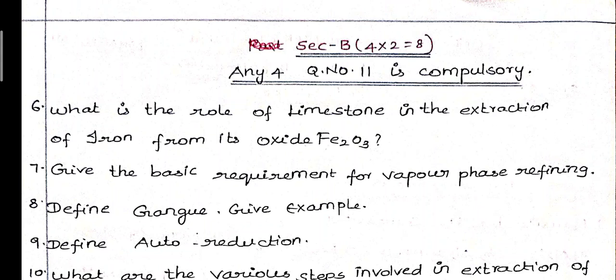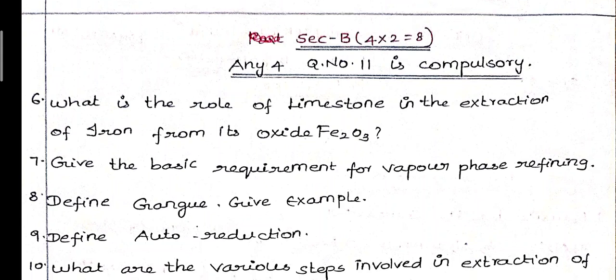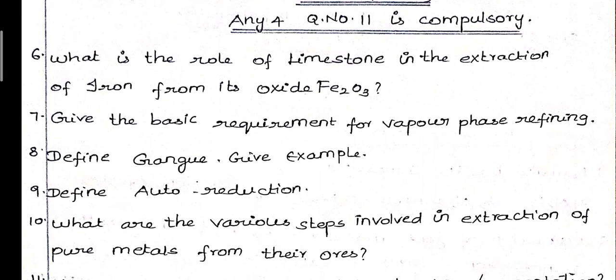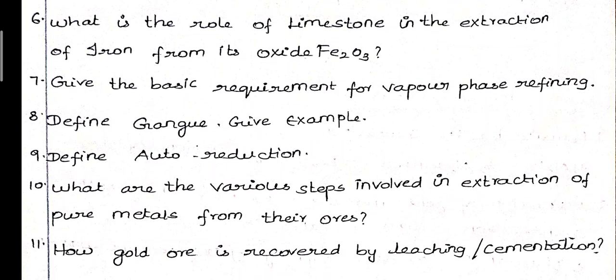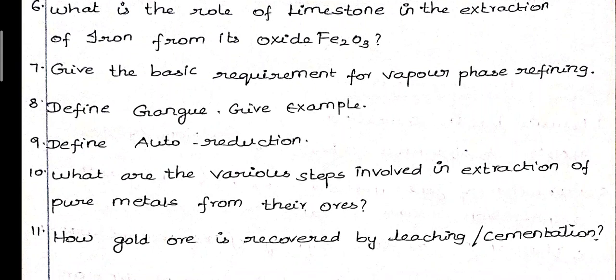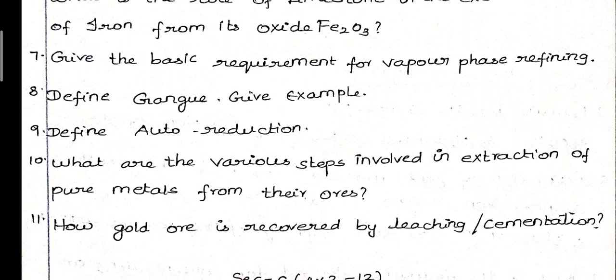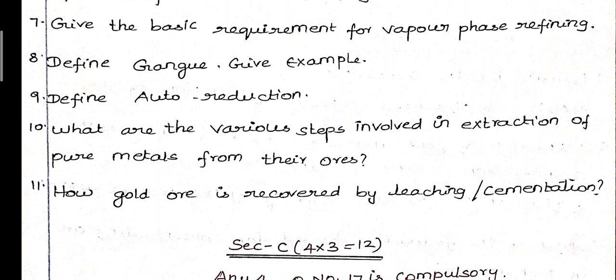6th question: What is the role of limestone in the extraction of iron from its oxide Fe2O3? 7th question: Give the basic requirements for vapor phase refining. 8th question: Define gangue and give an example. 9th question: Define auto reduction. 10th question: What are the various steps involved in the extraction of pure metals from their ores? 11th question: How is gold ore refined by leaching or cementation? Those are the two-mark questions.